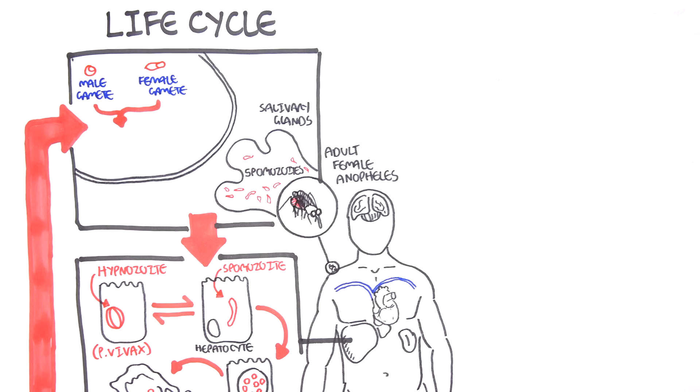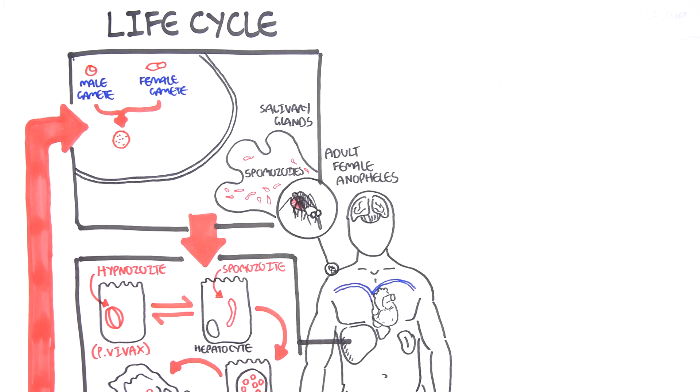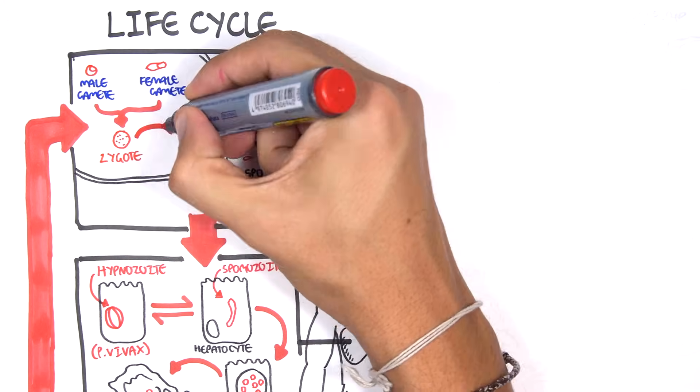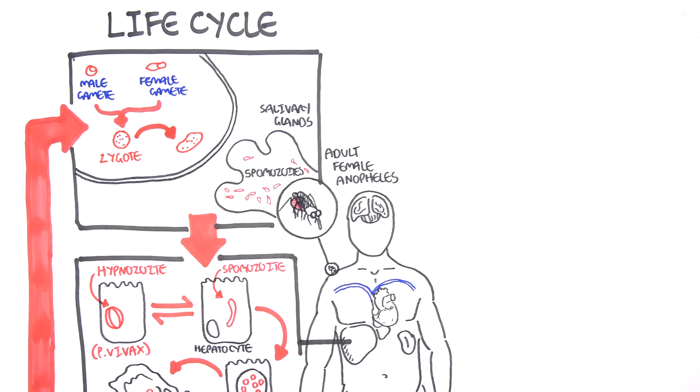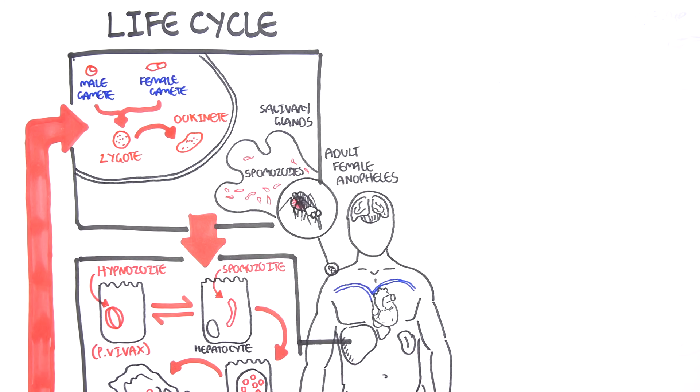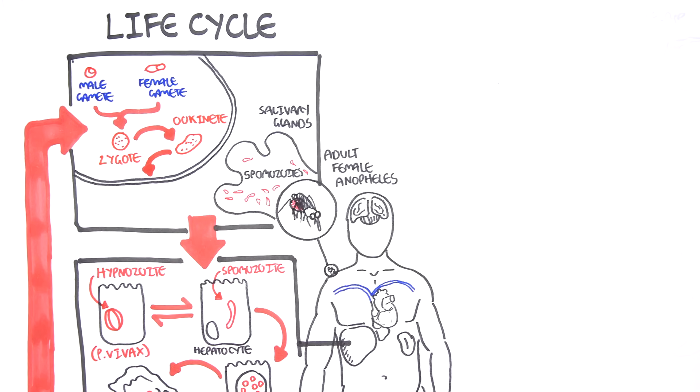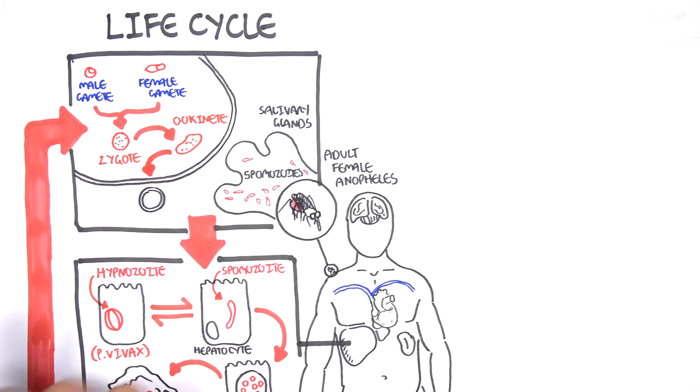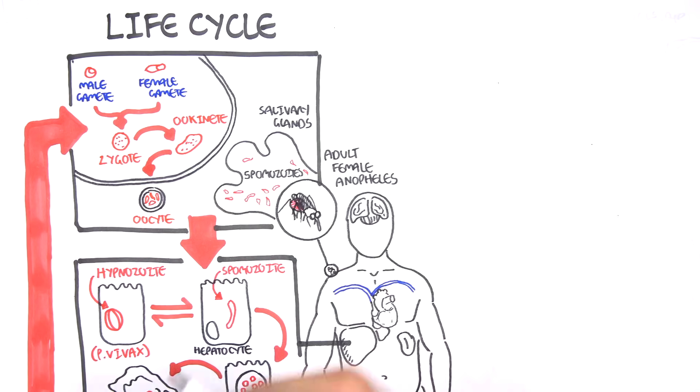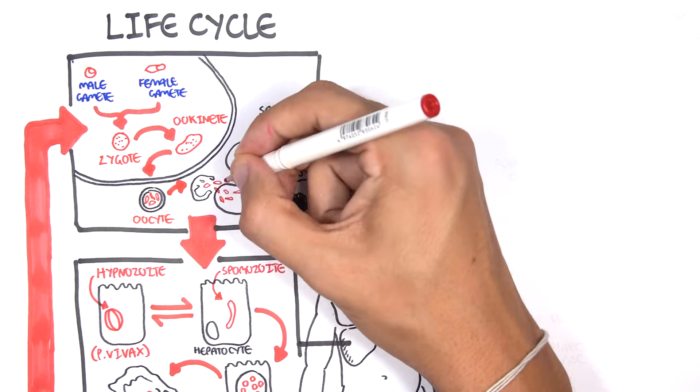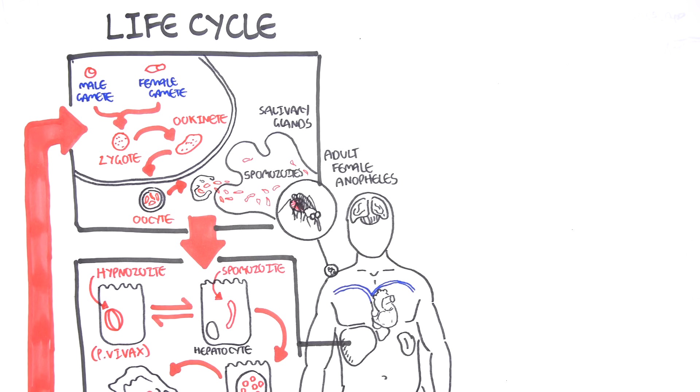And this is where, essentially, the male gametocyte and female gametocyte will form a zygote. The zygote, in turn, becomes a motile and elongated ookinete which develops into an oocyst. The oocyst grows, and then it will rupture, releasing sporozoites, which will make their way to the mosquito's salivary glands.